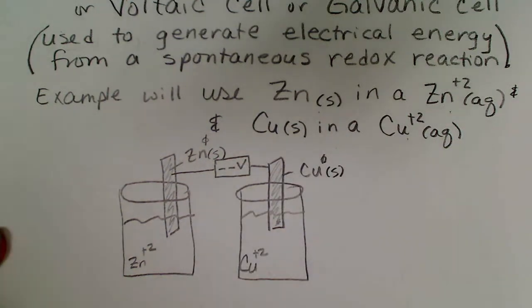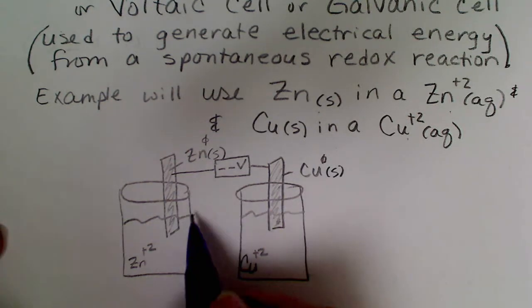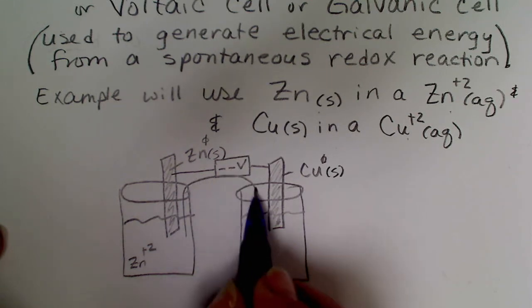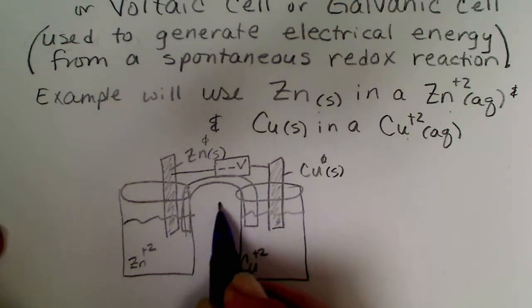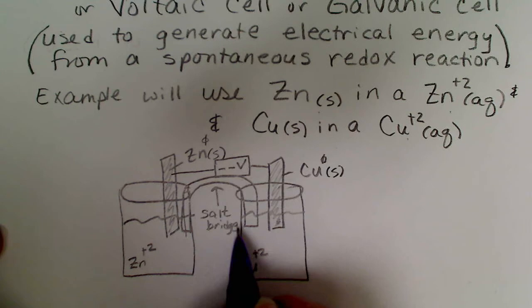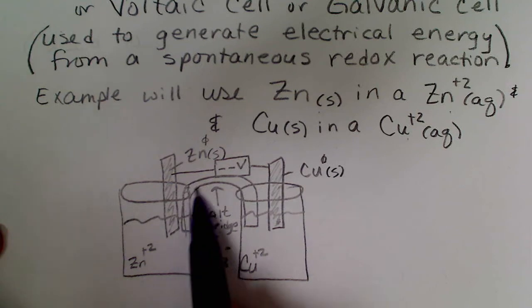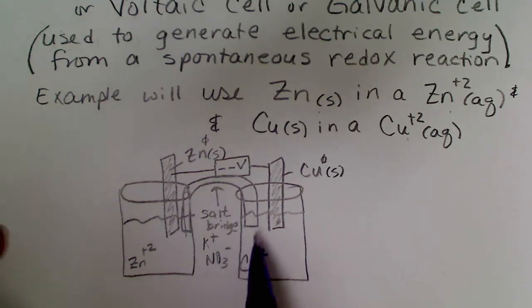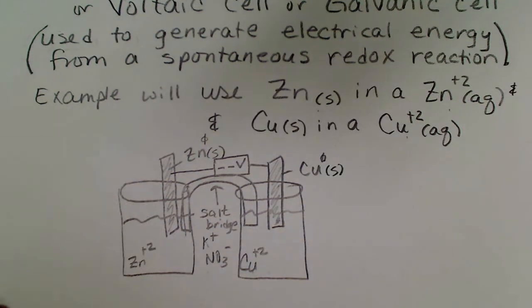We connect the electrodes with a wire. I'm going to draw a box representing a voltmeter, so if we had a voltmeter hooked up we could get a voltage reading. Since electrons are going to be transferred from one electrode to the other, in order to keep the charge balanced — because a charge buildup would stop the cell — we need a salt bridge. We use an ionic compound like KNO₃, with potassium ions and nitrate ions, which are always soluble.